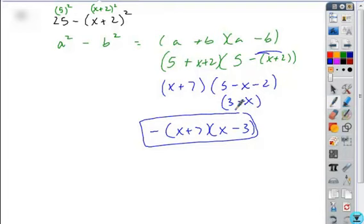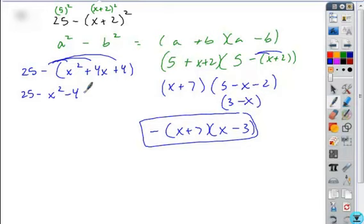Now, if you chose not to use that form, what you would need to do is expand this out. So you'd square the binomial, x squared plus 4x plus 4. Distribute your negative. Combine your like terms here.